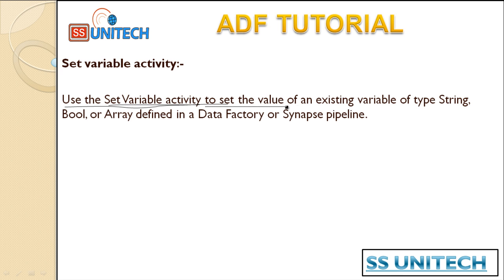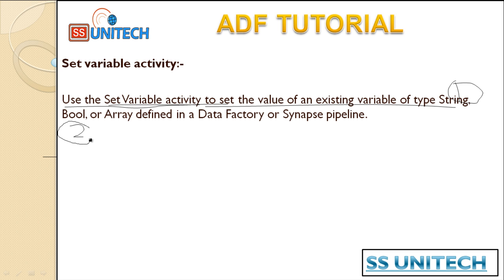So what is the set variable activity? The set variable activity is used to set the value of an existing variable of type string, bool, or array defined in the data factory. We can set variables under these three data types: string, bool, and array. We can get values from another activity and set that value into variables using the set variable activity.